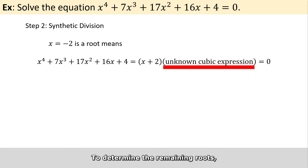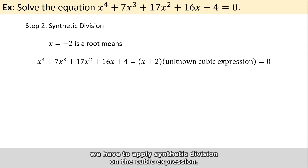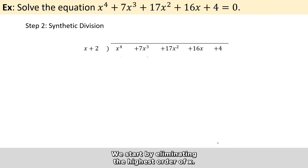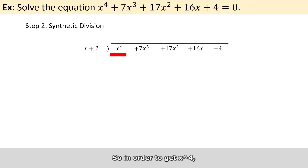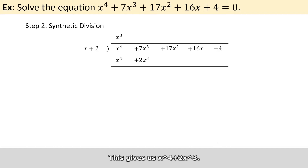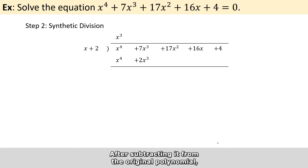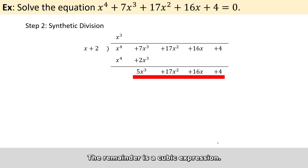To determine the remaining roots, we first have to apply the synthetic division on the cubic expression. We start by eliminating the highest order of x. So in order to get x to the power of 4, we need to multiply x plus 2 by x to the power of 3. This gives us x to the power of 4 plus 2 times x to the power of 3. And then after subtracting from the original polynomial, the remainder is a cubic expression.